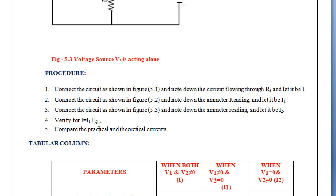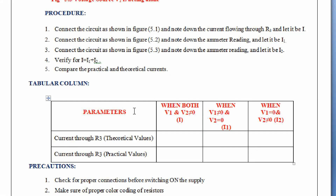At the last step, we have to compare practical values with the theoretical values. This is the tabular column which contains parameters: current flowing through R3 — theoretical value and practical value — when both V1 and V2 are acting; when V2 equals zero and V1 is not equal to zero, meaning V2 is short circuited and V1 is acting; and when V1 is zero and V2 is non-zero, that is V1 is short circuited and V2 is acting.